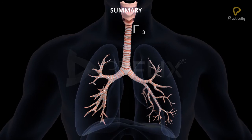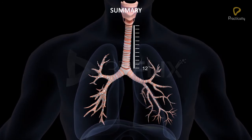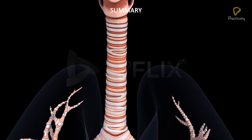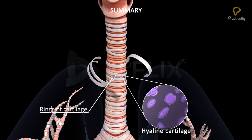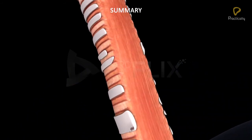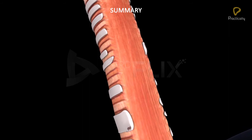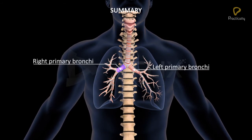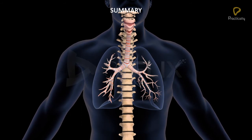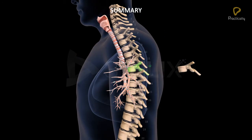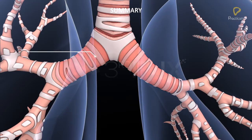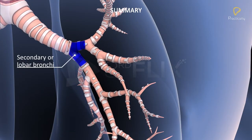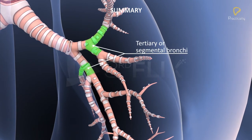The trachea or windpipe is a 10–12 cm long straight tube extending up to the mid-thoracic cavity. The wall of the trachea shows the presence of C-shaped hyaline cartilage rings along its length; these rings are incomplete dorsally and keep the trachea open. In the mid-thoracic cavity, the trachea divides into the right and left primary bronchi at the level of the 5th thoracic vertebra, with each primary bronchus entering the lung at the hilum and dividing into secondary or lobar bronchi, which further divide into tertiary or segmental bronchi.